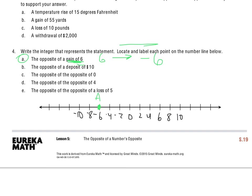I'm going to go ahead and do letter D, the opposite of the opposite of 4. So I'm starting with 4, the opposite is negative 4, and the opposite of the opposite is 4.